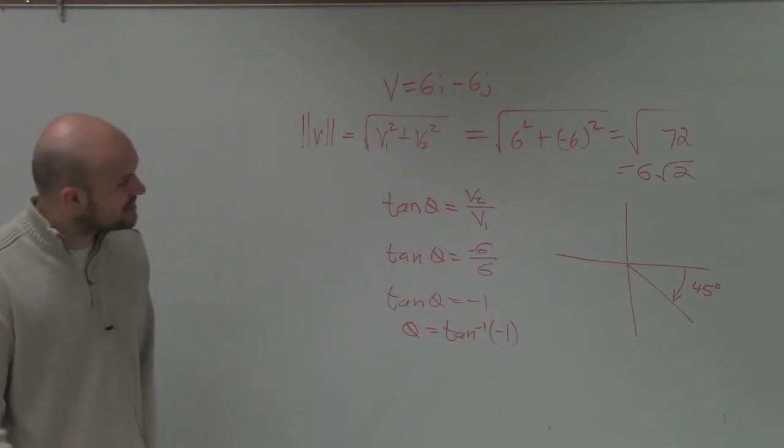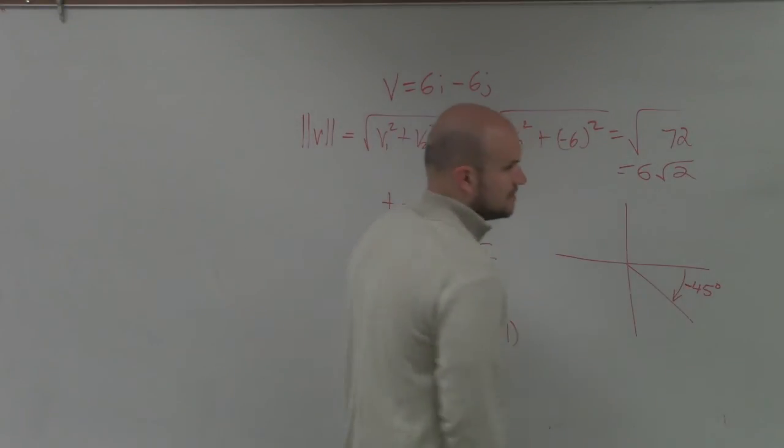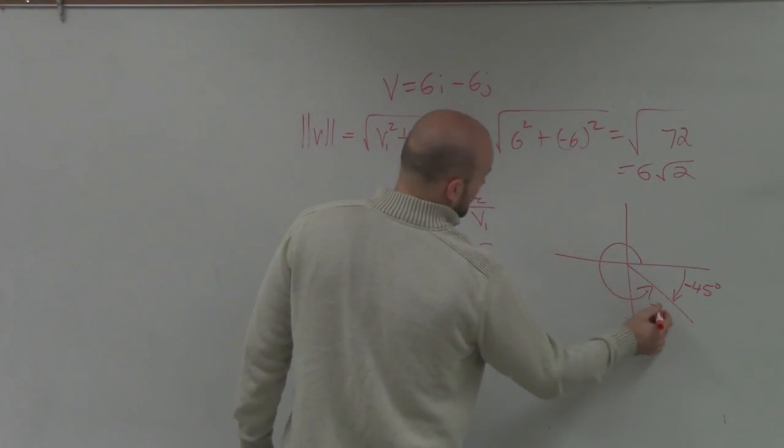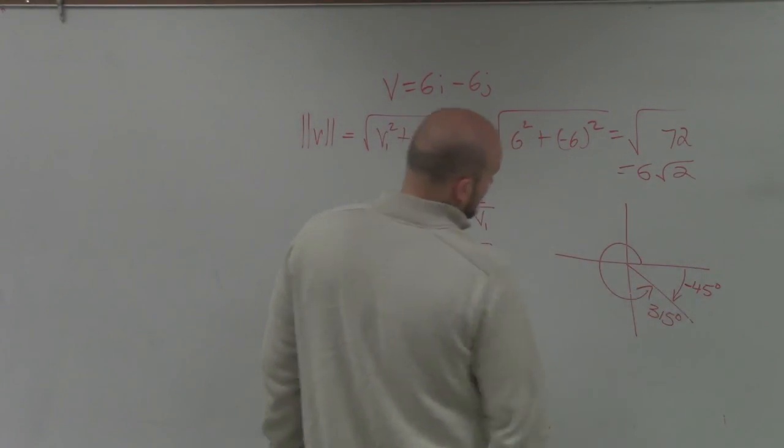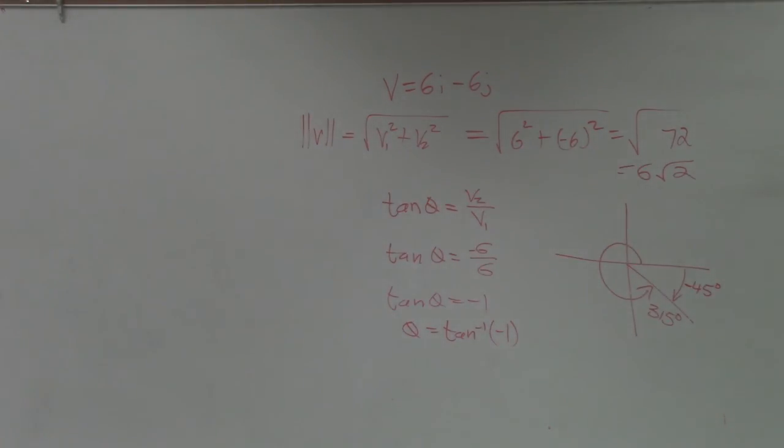So theta equals negative 45 degrees. That would be it, unless you also think about their vectors at 315 degrees, which is going to be the same thing.